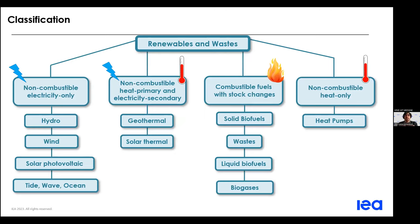Now let's move to the key concept section. This is very important and relates to the first question I posed. Renewable products are classified into four groups, and this classification is based on the form of primary energy considered from a statistical point of view, and how this form can be converted into another. I'll explain this starting from the first group: electricity only. If you consider wind or hydro, the first form of energy generated is mechanical energy, for example from the rotation of a wind turbine, that is then converted into electricity.